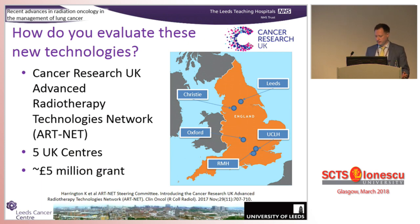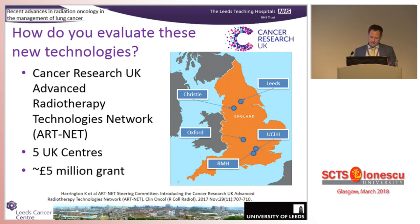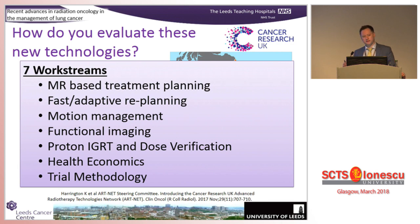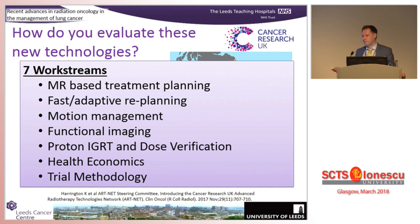In the UK, we're trying to evaluate these new technologies, and Cancer Research UK as part of the ArtNet project has funded five centres to come together: Leeds, the Christie, Oxford, UCH, and the Royal Marsden. What we're trying to do is show we've got these new tools that look fantastic, but how can we prove their value? The work streams cover MR-based planning, fast and adaptive replanning, motion management, functional imaging, bringing proton verification systems up to LINAC standards, fitting into a health economic model, and designing ethical trials to prove their value.